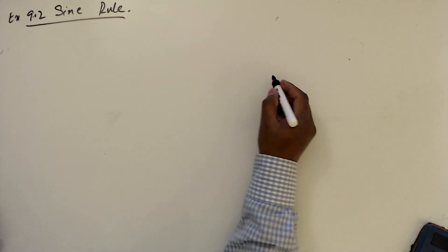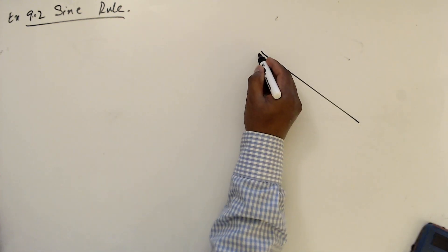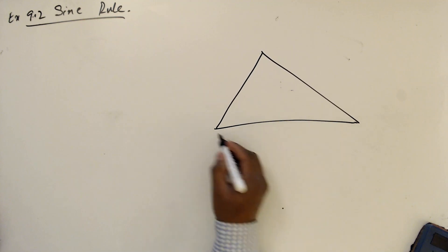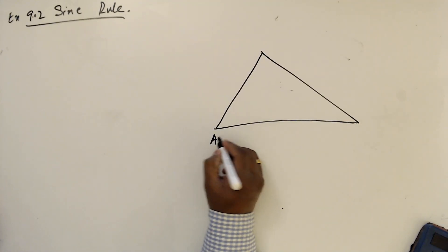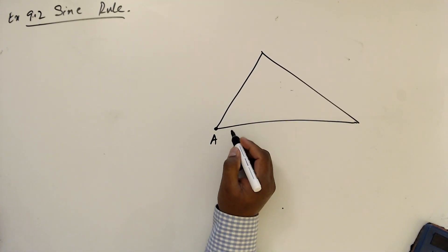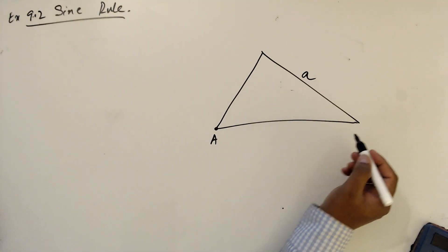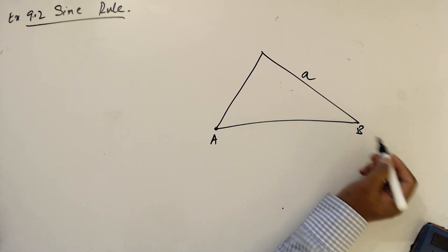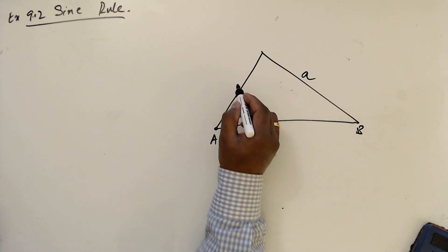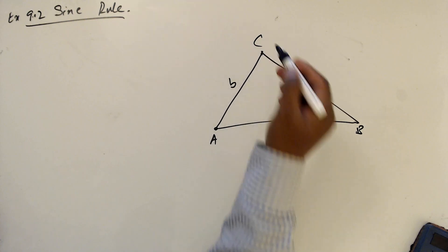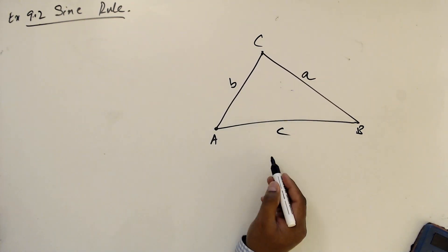9.2 Sine Rule. We'll take a triangle. If this vertex is A, then the side opposite this vertex has length a. This vertex is B, and the side opposite it has length b. This vertex is C, and the side opposite it is c.